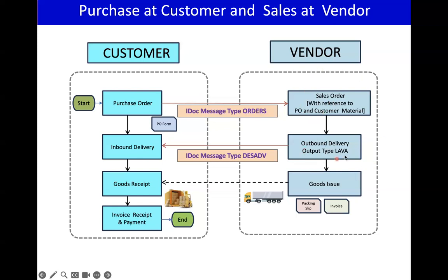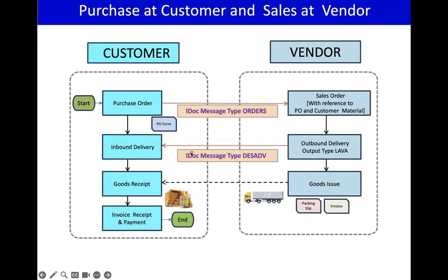Once the sales order is created, they create an outbound delivery. If they are using SAP, there is an output type called LAVA which sends the outbound shipping notification. If they are not using SAP and are using another ERP system, they create the outbound delivery in their system and send that information to SAP, which will be created as an inbound delivery — we call this an Advanced Shipping Notification. Under the purchase order confirmation tab you can see the quantity and when they are going to send it. In SAP it will be created with IDoc message type DESADV.